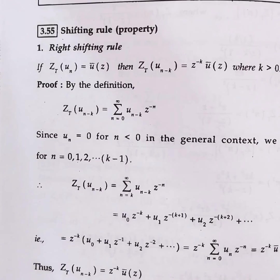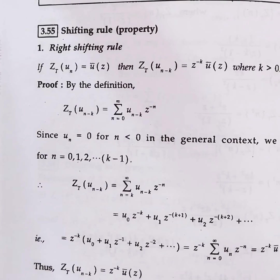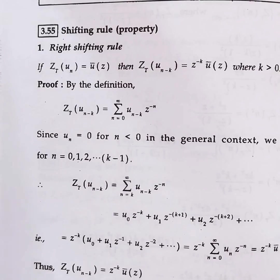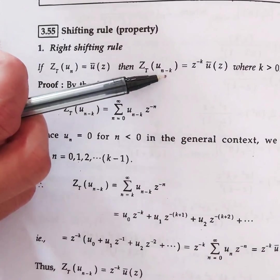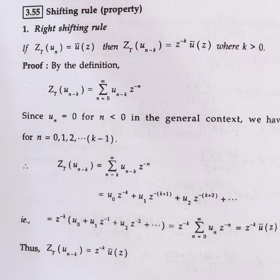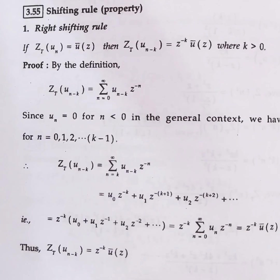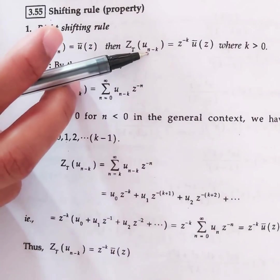We have right shifting rule as well as left shifting rule. First we will see the right shifting rule. If z-transform of u(n) is ū(z), that is if I know z-transform of u(n), then z-transform of u(n-k) is z^(-k) into ū(z), where k > 0. So if I know z-transform of u(n), I can find z-transform of u(n-k).